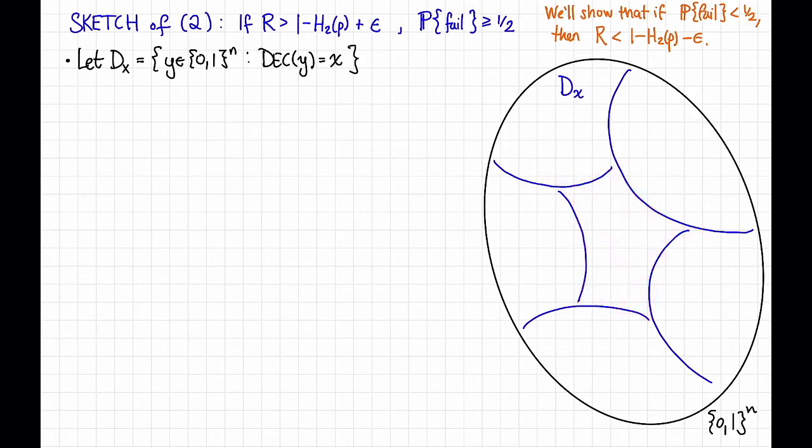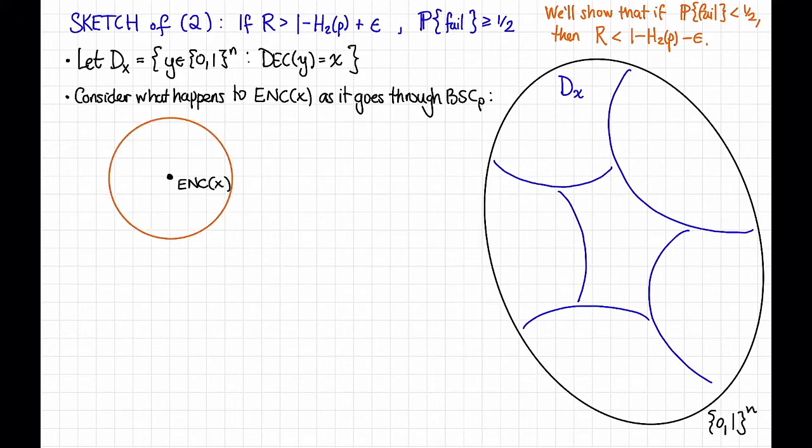Now, let's consider what happens to the encoding of x as it goes through the binary symmetric channel. So let's say that this is the encoding of x. And consider the Hamming ball around that encoding of radius p times n. Maybe it looks something like that. Now, if I start with this point here, the encoding of x, and I shove it through the BSC, then I expect about a p fraction of the bits to be flipped. It might not be exactly a p fraction, but it's about a p fraction.